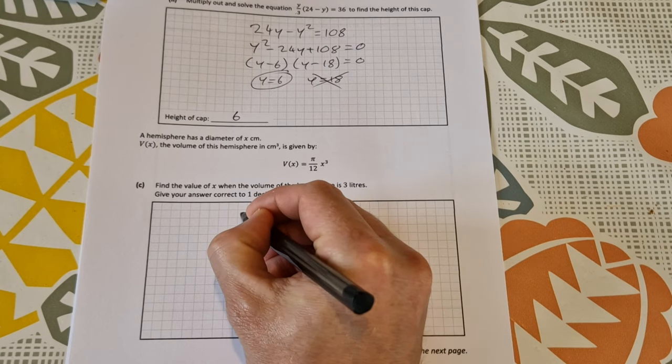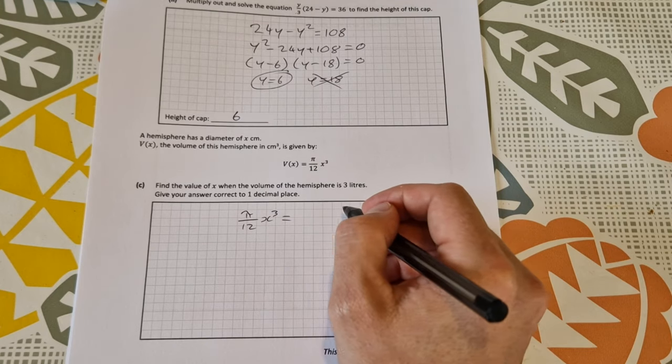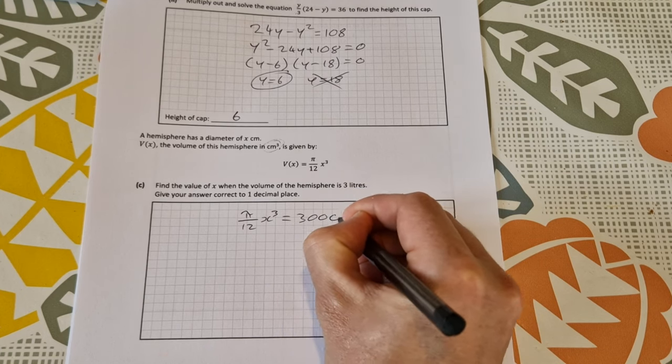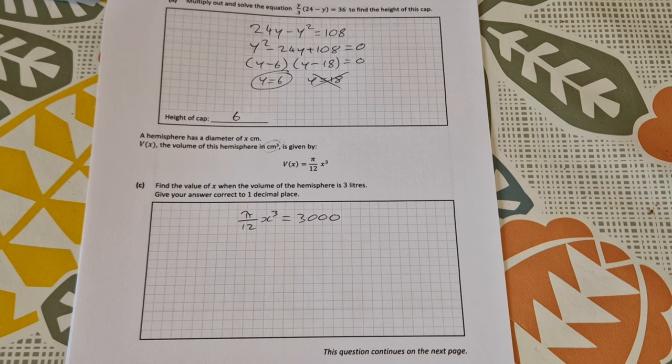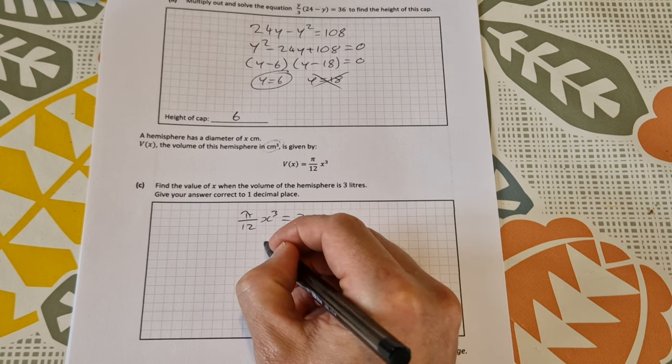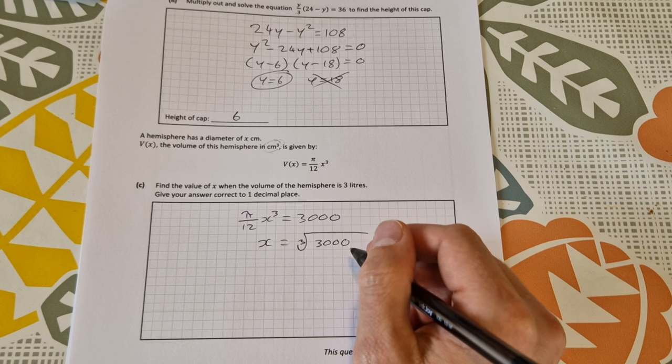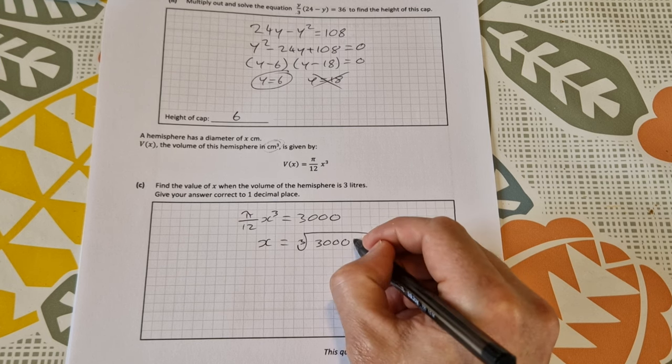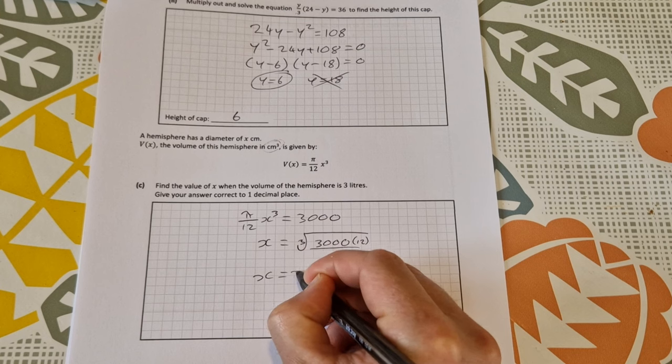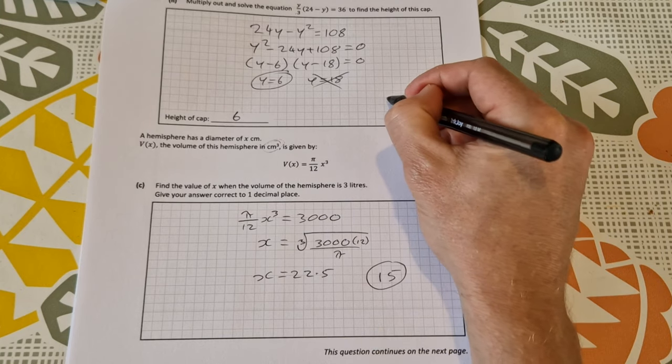So volume is equal to that. So that's pi over 12 x cubed is equal to 3 liters, the volume. And it's in centimeters, cubic centimeters rather. So I'm going to put it as 3000 cubic centimeters rather than 3 liters. So if we want to go and solve for x, we would divide by pi over 12 and we would take the cubed root. So I can say x is equal to the cubed root of 3000. Dividing by pi over 12 is the same as multiplying by 12 over pi. So say times 12 over pi. And you can pop that into your calculator to get x is equal to 22.5. So that is worth 15 marks. The one above, I forgot to say, was worth 5 marks.